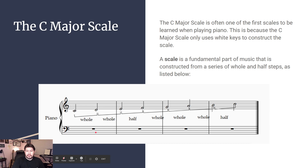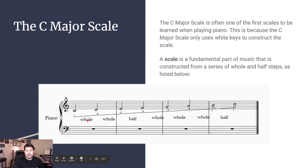Looking at this diagram, we have a series of whole and half steps. To construct any major scale it is the exact same pattern: a whole step between the first two pitches, a whole step between the second and third, a half step between three and four, a whole step between four and five, whole between five and six, whole between six and seven, and then a final half step which we refer to as the leading tone — the half step between the seventh and the octave. This also applies when you are coming up from below; we still have the same series of whole and half steps.